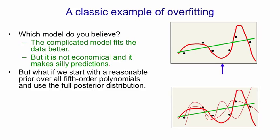But everything changes if, instead of fitting one fifth order polynomial, we start with a reasonable prior over fifth order polynomials, for example, that their coefficients shouldn't be too big.